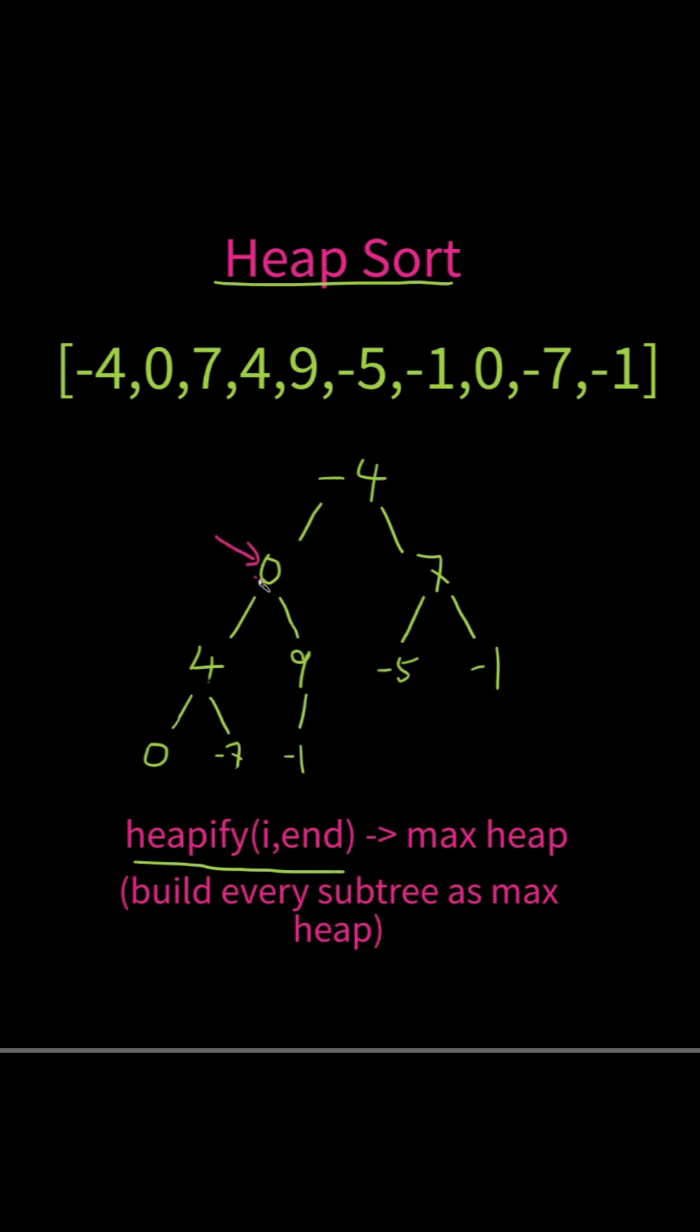For example, if we are calling the heapify function on here, on this subtree, they are not a max heap so we need to substitute the root. We need to bring 9 to the root and bring 0 as the right child.